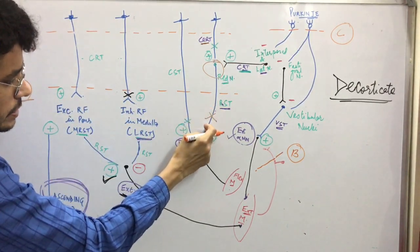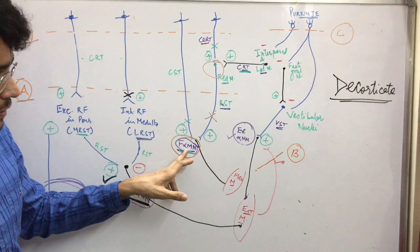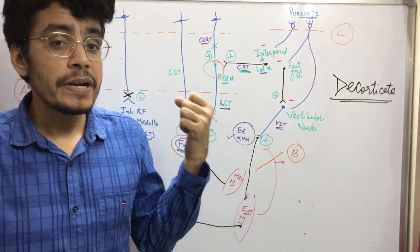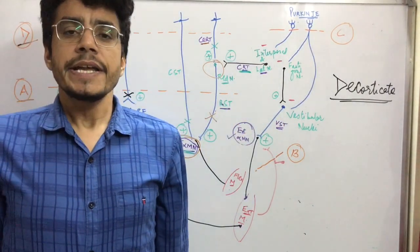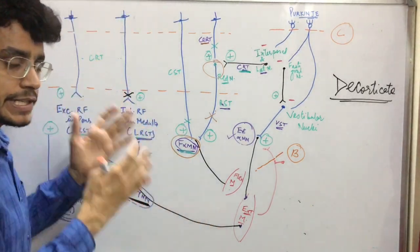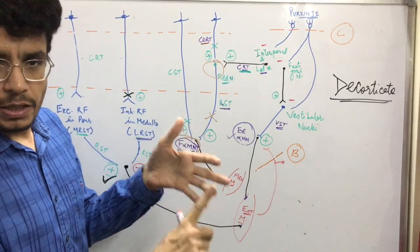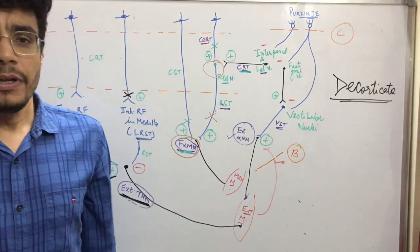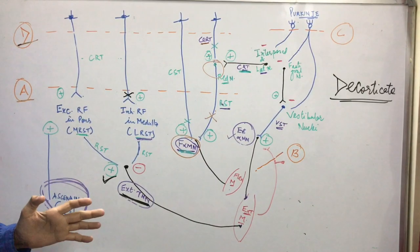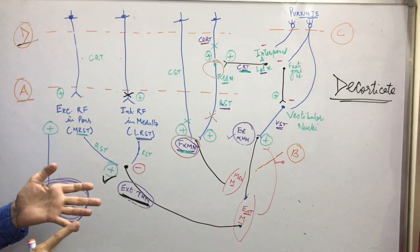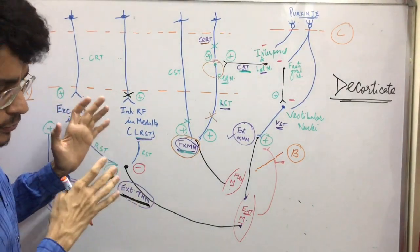If that connection gets cut, then the flexor alpha motor neurons of the upper limb will lose their stimulation — that flexion will be removed. Entire extension will be there: extension of the neck, extension of the back, extension of the upper limb as well as extension of the lower limb. That posture is decerebrate posture. Now to prove whether this rigidity is happening due to alpha motor neuron or gamma motor neuron activity, we look at this experiment.